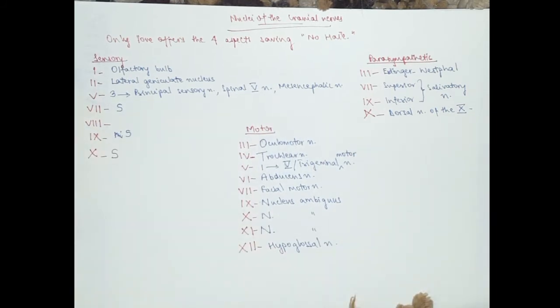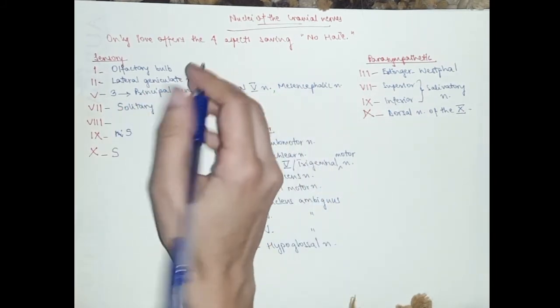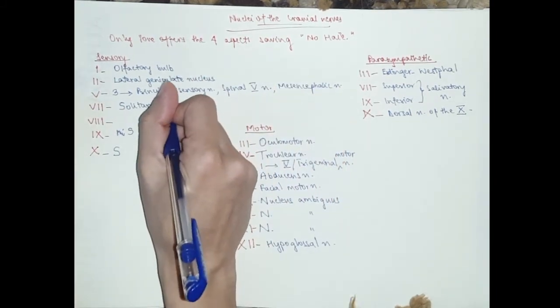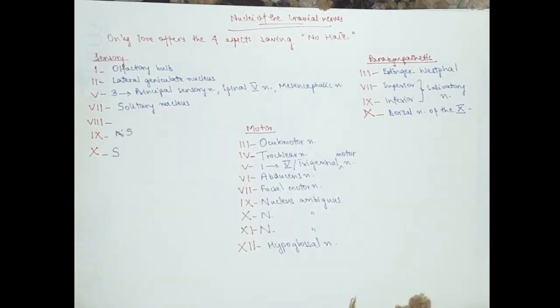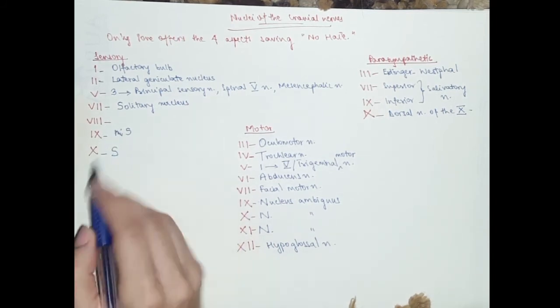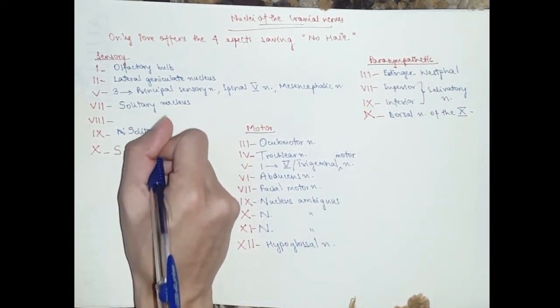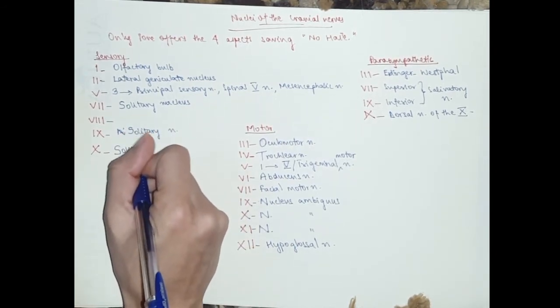Then seven would be the solitary nucleus or nucleus of the solitary tract. And if you remember, the solitary tract is not only for seven, but also for nine and ten.